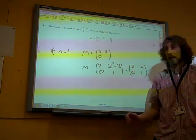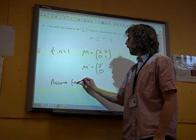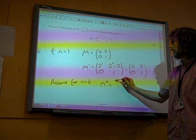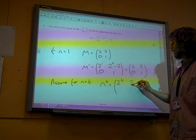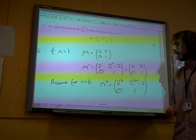Right, now what we do is we state our assumption. We're going to assume for n equals k. So M^k is (2^k, 2^(k+1)-2; 0, 1). Ta-da!